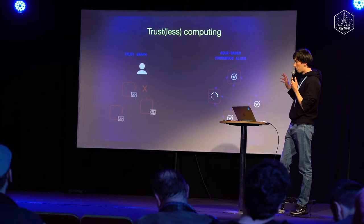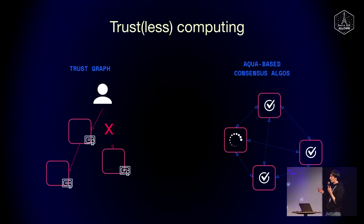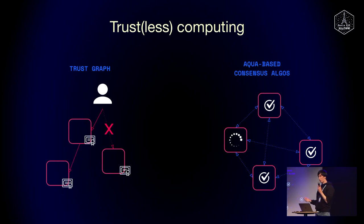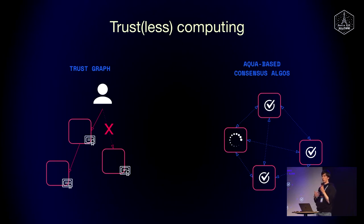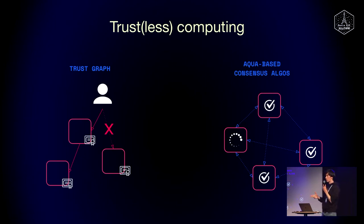About the trustlessness of the computing: when we use a decentralized network, we expect some security model. Our approach is that by default, the computation is trusted. If you're using a remote node and deploying your function on it, you trust that node to execute the function correctly. This means you can use Fluence when you deploy your own nodes, or when you build a peer-to-peer application where every user is a node in the network.